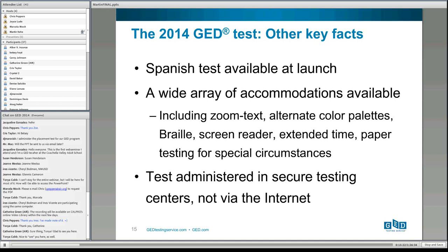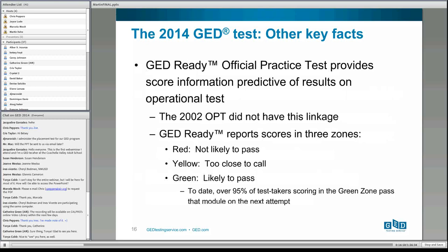A Spanish test has been available since January 2nd — the first time we've been able to launch the Spanish and English tests simultaneously. We have a wide range of accommodations including zoom text, alternate color palettes, braille, screen reader, extended time, and paper testing for certain special circumstances. The test is administered in secure testing centers, not via the internet. It's a computer-based test available at testing centers, not an online test.